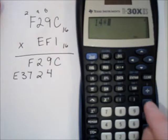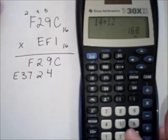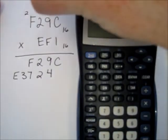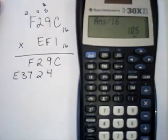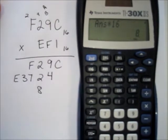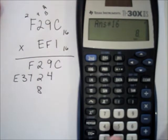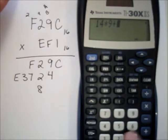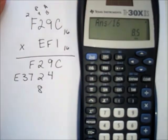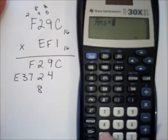Now the last multiplication row: E times C is 14 times 12, which is 168. Divide by 16 to get 10.5 — ten is A, so we carry A. Subtract 10 and multiply by 16 to get remainder 8. Then 14 times 9 plus the 10 carried gives 136. Divide by 16 to get 8.5 — carry 8, remainder 8.